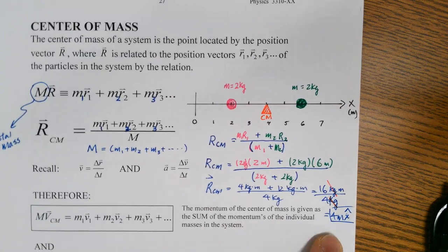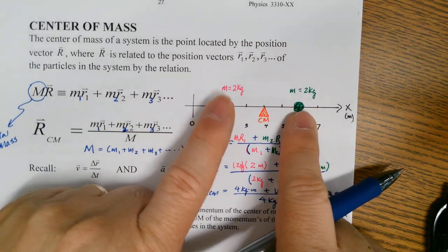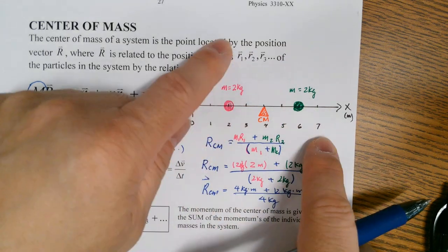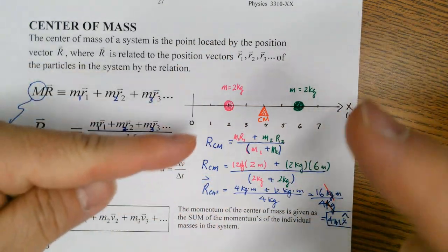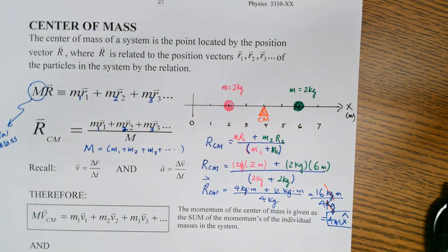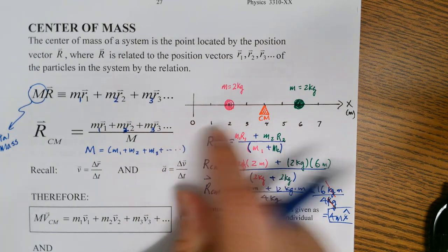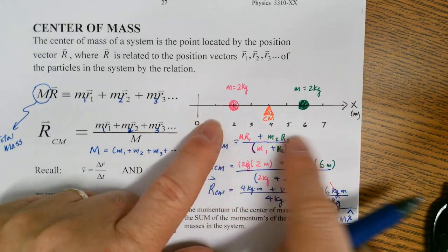Obviously this looks too easy. We can switch it up by giving different masses, or we don't even have to put these on the x-axis — we could have them all over the place in the xy plane, or even in x, y, z space. You could still find the center of mass of the whole system anywhere relative to a certain reference location.